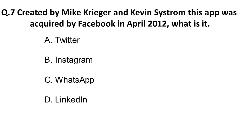Question 7: Created by Mike Krieger and Kevin Systrom, this app was acquired by Facebook in April 2012. What is it? Twitter operates independently and LinkedIn was bought by Microsoft. Instagram and WhatsApp were both bought by Facebook and work as subsidiaries. The correct answer is Instagram — founded by Mike Krieger and Kevin Systrom, then acquired by Facebook in April 2012.